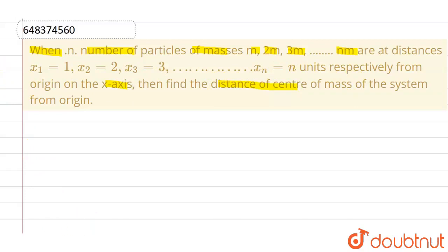So suppose this is the x-axis and the first particle is placed at x equals to, or x1 equals to 1 meter. Let's say this is origin and the first particle is placed at (1,0) and its mass is m.